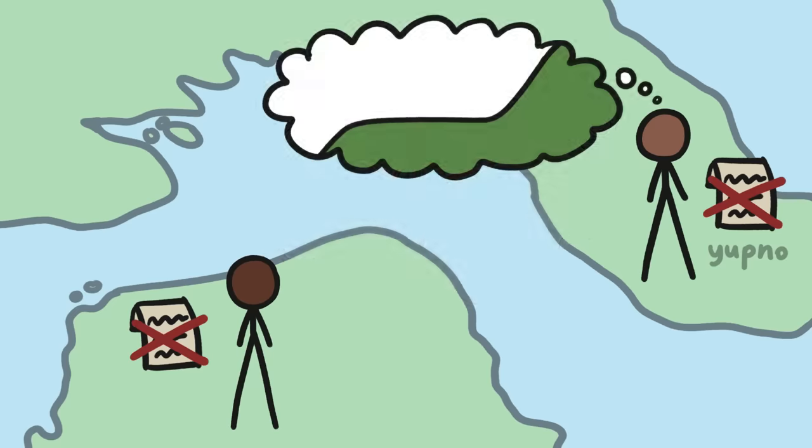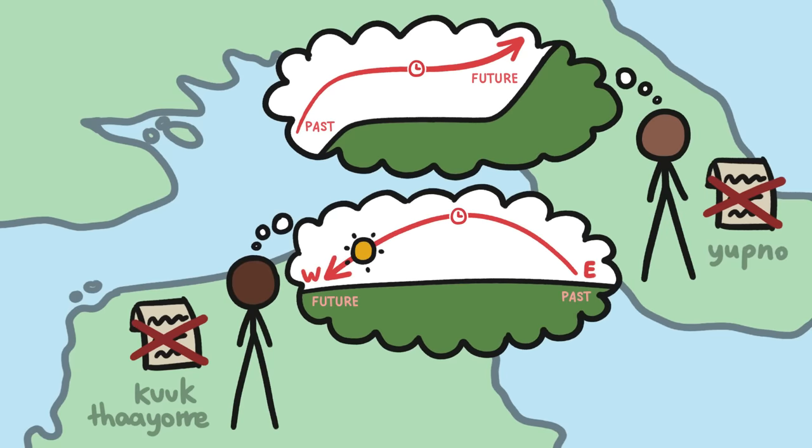For the Yupno tribe in mountainous Papua New Guinea, the past lies downhill and the future uphill. For the Australian Kuk Taor, time flows from east to west.